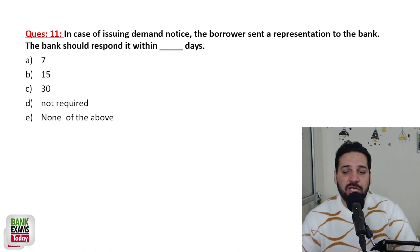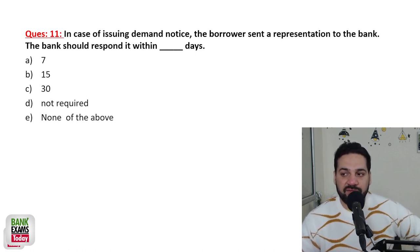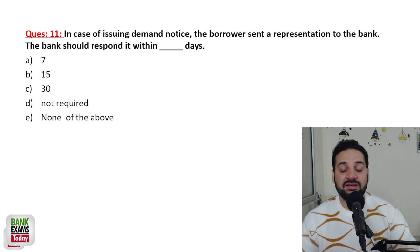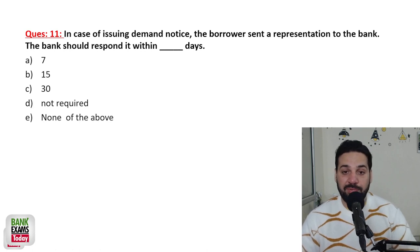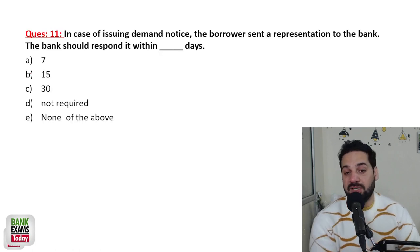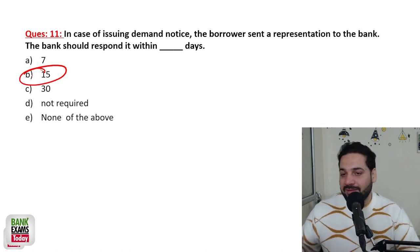In case of issuing a demand notice, if the borrower sends a representation to the bank, the bank needs to reply within 15 days. So while the bank sends a 60-day notice to the borrower, if the borrower responds, the bank must reply to that representation within 15 days.